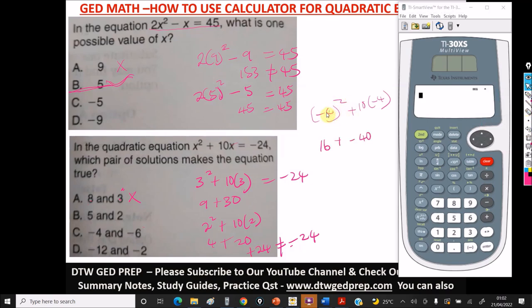So right here we now have to punch in these values in our calculator. So we do (-4)² plus 10 in parentheses, negative 4, close the parentheses, then we press enter. You can see that this has given us negative 24. So using this would equate to -24. So this is a correct value. This makes the equation true.